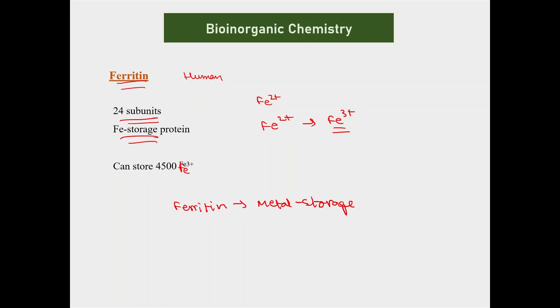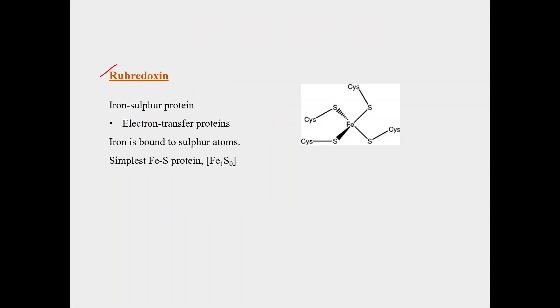Next moving on to the next metalloprotein which is given is rubridoxin. So rubridoxin is an iron sulfur protein. This is the simplest iron sulfur protein with one iron. We often denote it as Fe1S0. So why S0? Because there are iron sulfur proteins which have inorganic sulfur.